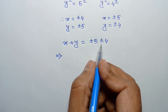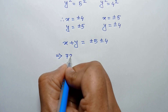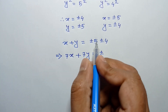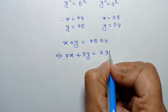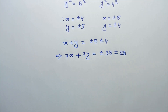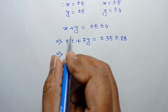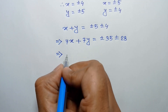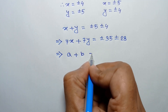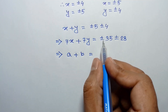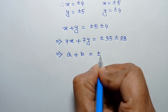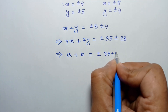Multiplying both sides by 7, we can write 7x plus 7y is equal to plus or minus 5 times 7, which is 35, plus or minus 4 times 7, which is 28. Substituting 7x as A and 7y as B, we get A plus B is equal to, for the same sign case, plus or minus 35 plus 28.